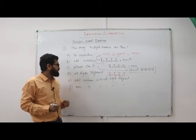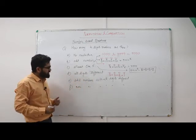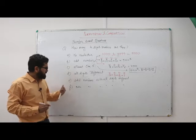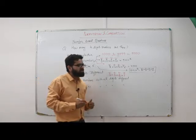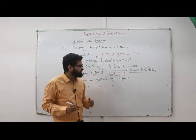So the answer for all-digits-different four-digit numbers is 9 × 9 × 8 × 7, which is quite similar to what we've seen before.